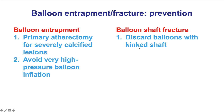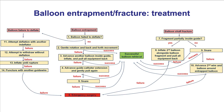When it comes to balloon shaft fracture, the key concept is to not insert a balloon if it becomes kinked. It is best to remove it, discard it, and use a new balloon. If a complication does happen, we will discuss separately what to do if there is failure to deflate, balloon entrapment, or fracture of the balloon shaft.